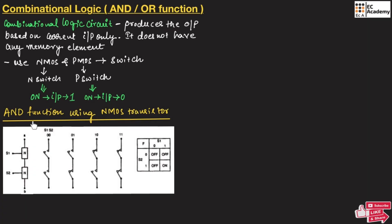Now let us understand the AND function using NMOS transistors. Here, two NMOS transistors are connected in series as shown in this figure. Across the gate of each NMOS, we apply the gate input and each NMOS transistor acts as a switch. The first NMOS transistor acts as switch S1 and the second NMOS transistor acts as switch S2. The NMOS or N switch will be ON only when the input is equal to 1.